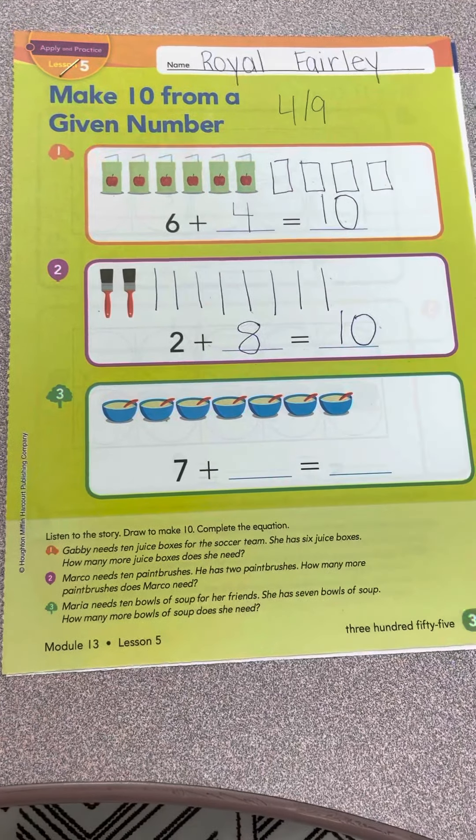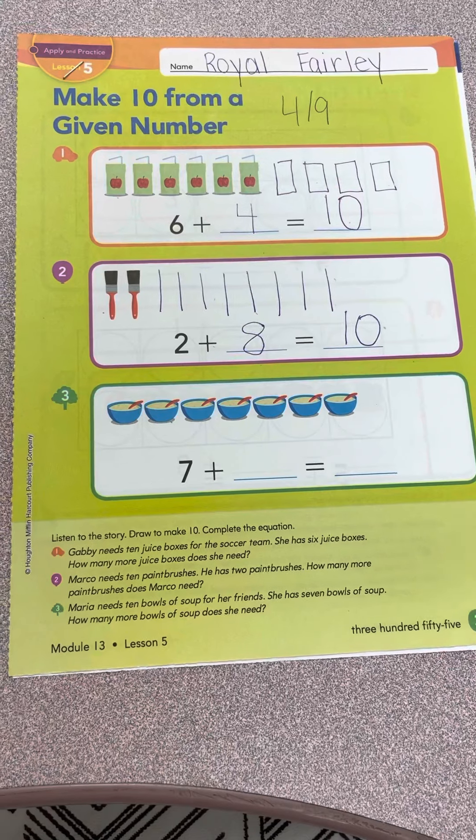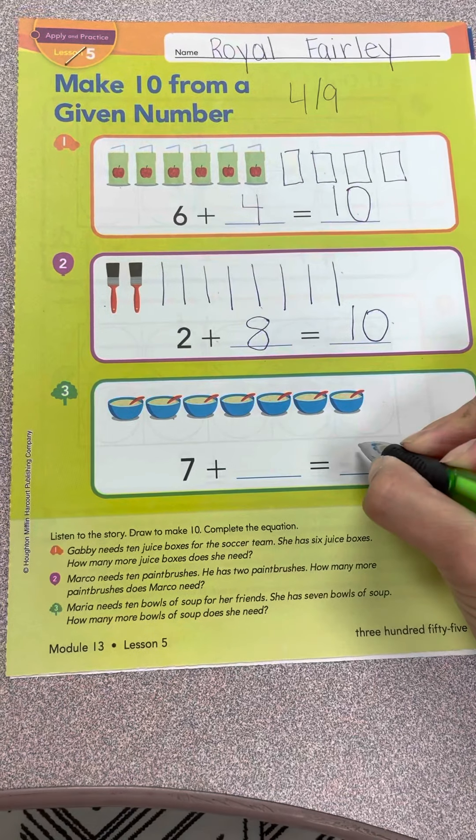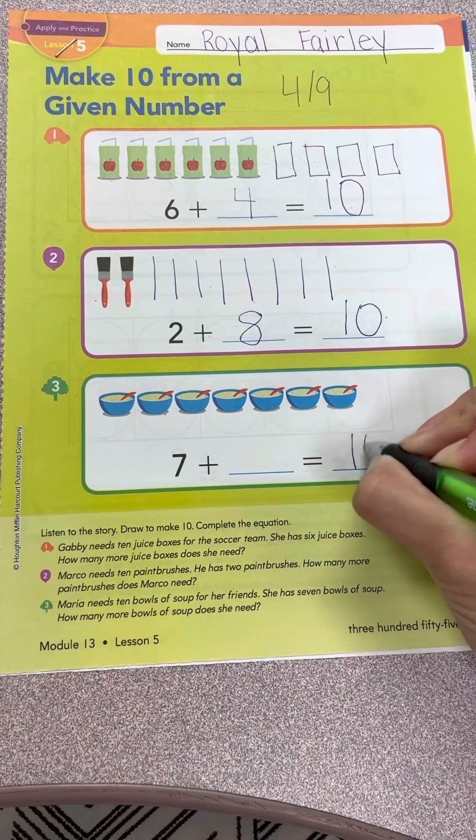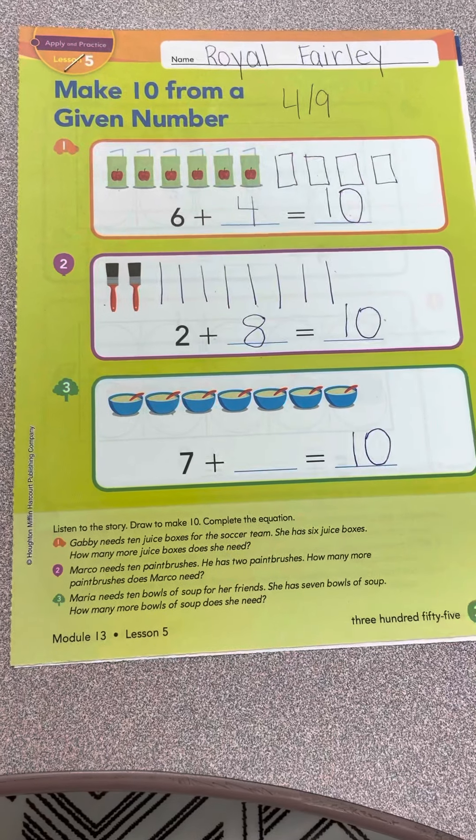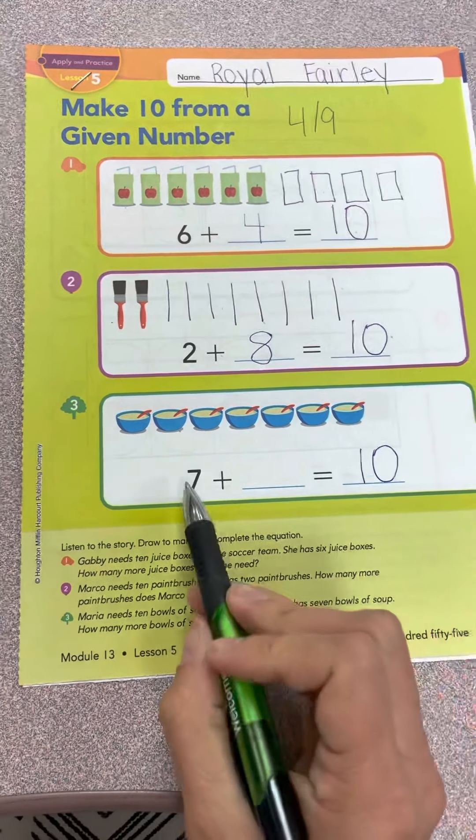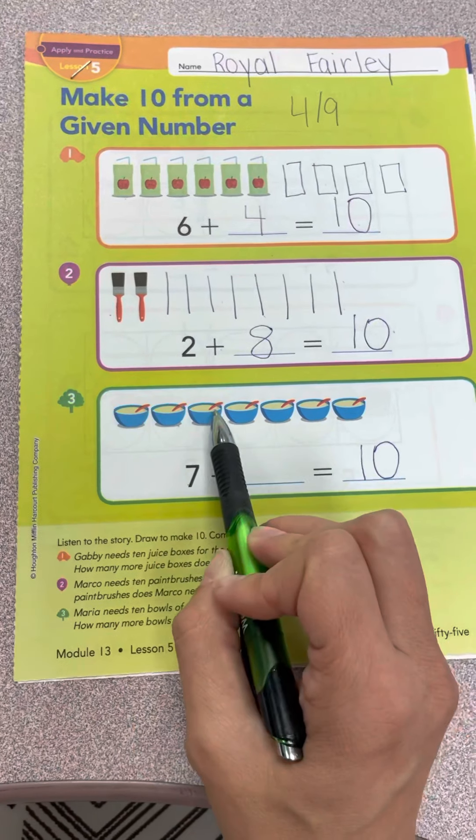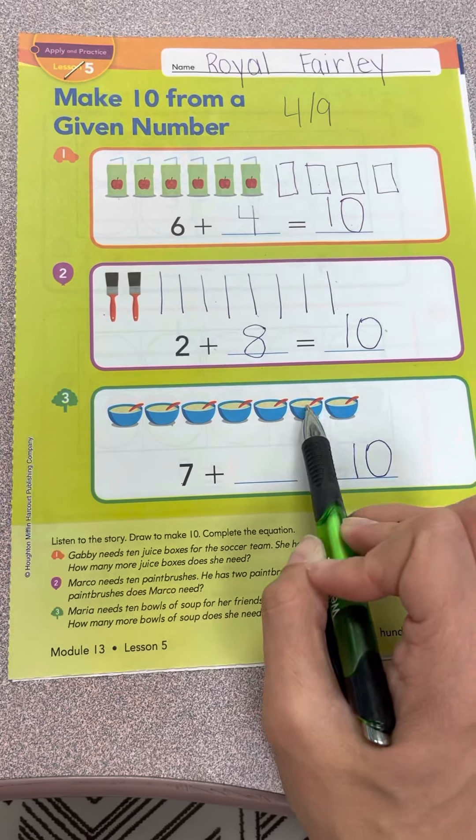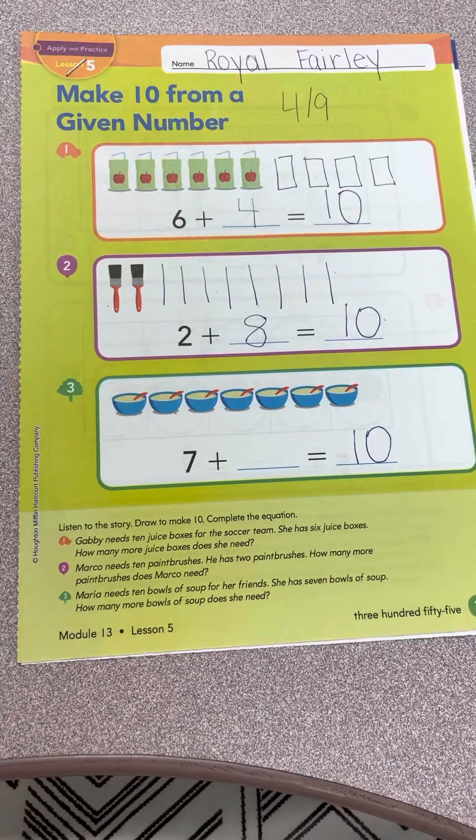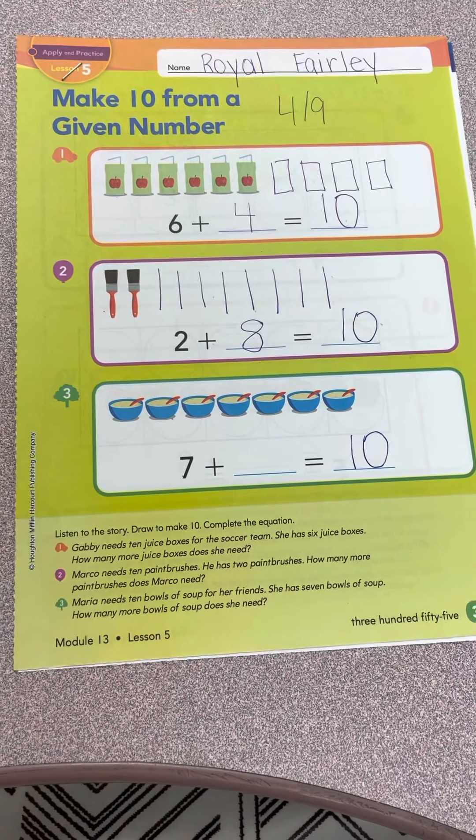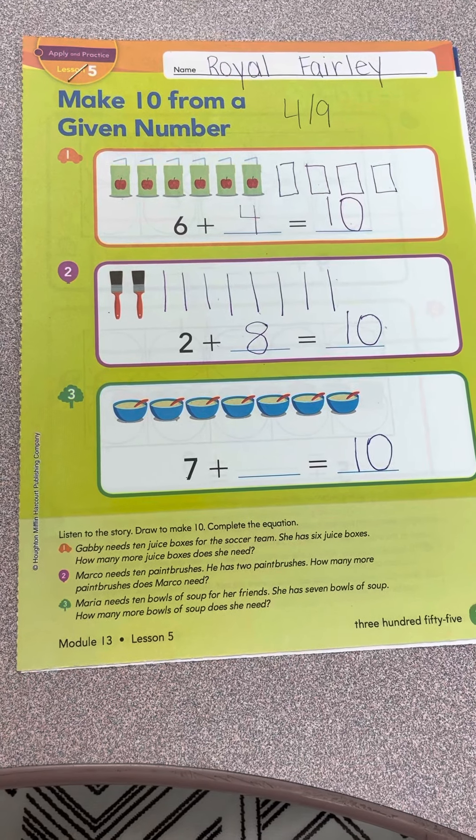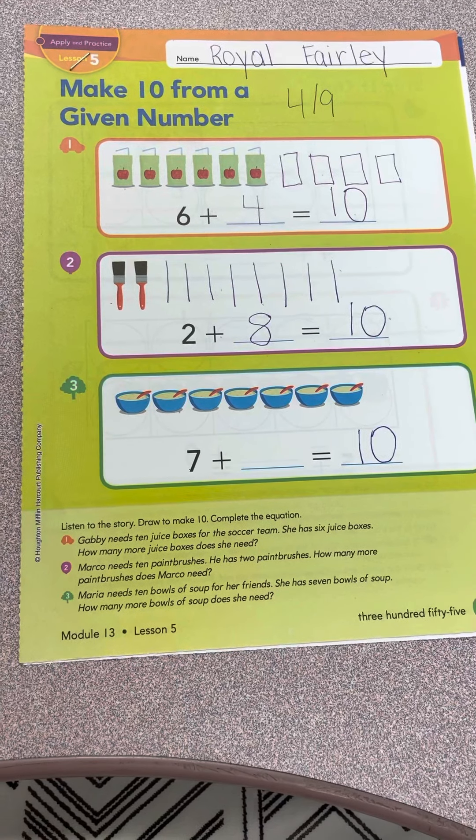Listen to the story. Maria needs 10 bowls of soup for her friends. She has 7 bowls of soup: 1, 2, 3, 4, 5, 6, 7. How many more bowls of soup does she need? So let's count on from 7 to get to 10.